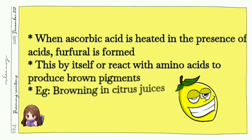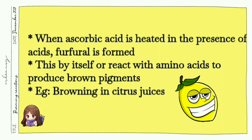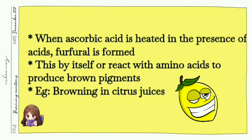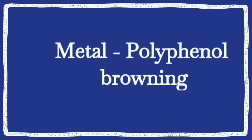Ascorbic acid browning occurs when ascorbic acid is heated in the presence of any other acid. As a result of this heating, a product called furfural is formed, and this furfural, either by itself or after reacting with amino acids, results in the production of brown pigments. This kind of browning especially occurs in citrus fruits or citrus juices.